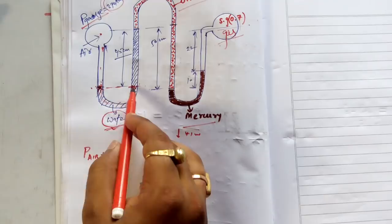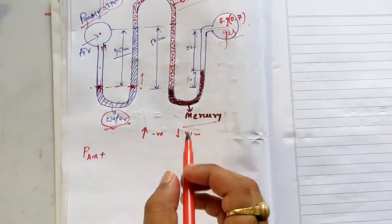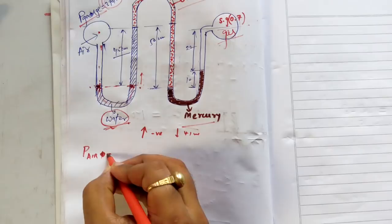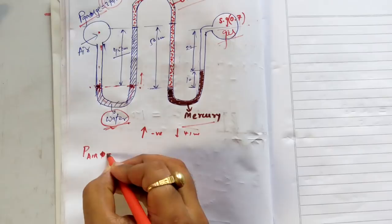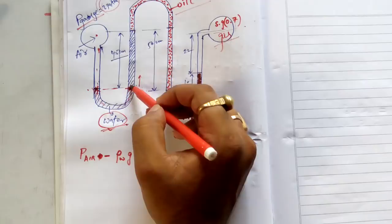I will move up, so a negative sign comes. The fluid from here to there is water, so density of water times G times the height, which is 45 centimeters or 0.45 meters. I don't have to find the pressure all over the middle horizontal section because I can jump from one point to another.